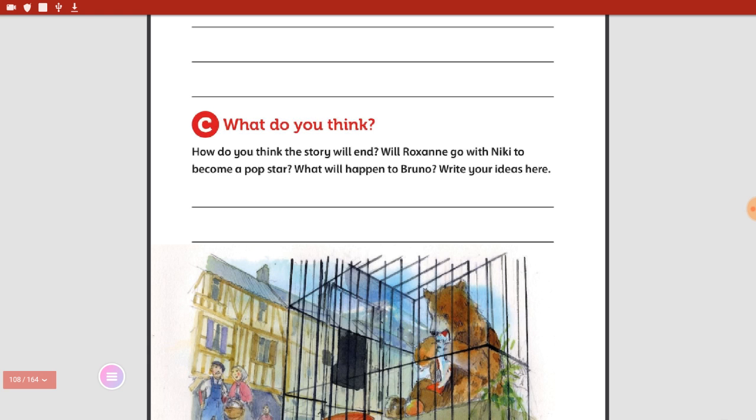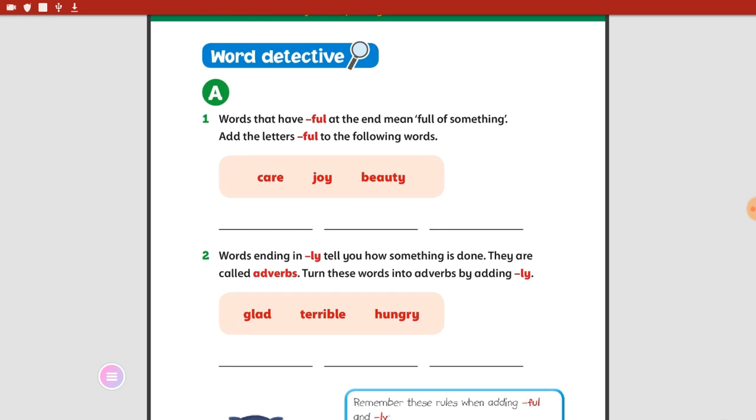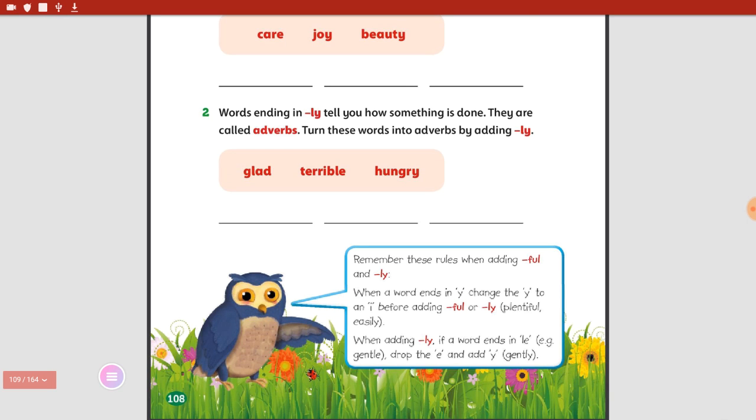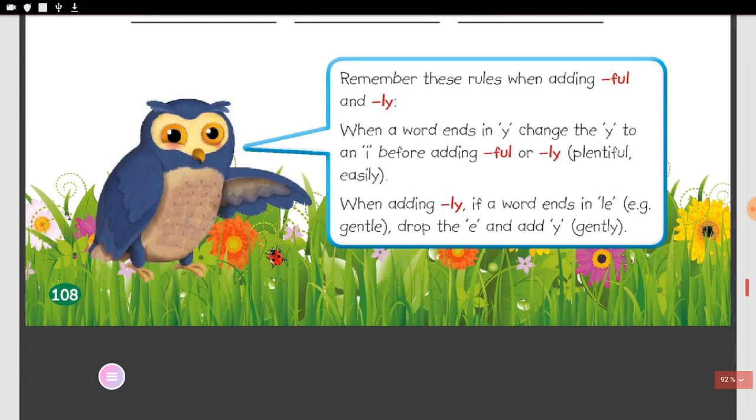This one. You have this exercise that you will do with other teachers, but I just want to show it to you. Look. Words that have full at the end mean full of something. This is what we did last week. So adding the letters full to the following words, we will have careful, joyful and beautiful. Right? So this week we're doing all the words ending with LY. Let me open the pen. With LY. And they tell us how something is done and they're called adverbs. Again, the other teacher will revise this with you. Turn these words into adverbs by adding LY. So we will have the word gladly and terribly and hungrily. Remember these rules. This is what I'm telling you and I want you to see. This part. OK. I'll make it bigger. Remember these rules when adding full and LY. When a word ends in Y, change the Y to an I before adding full or LY. Like plentiful and easily.